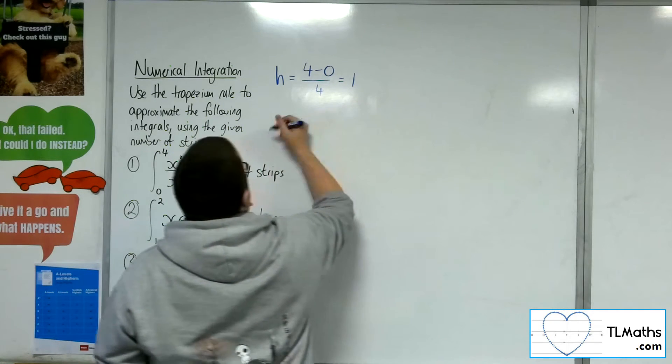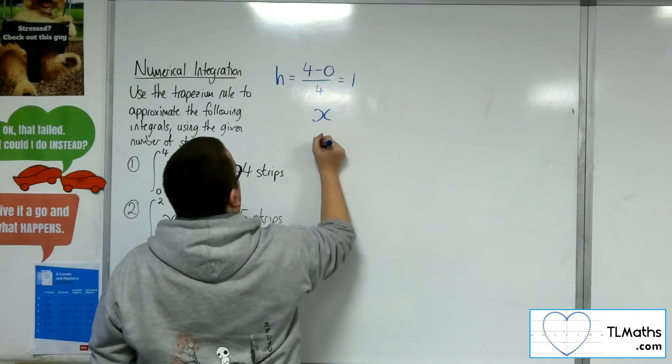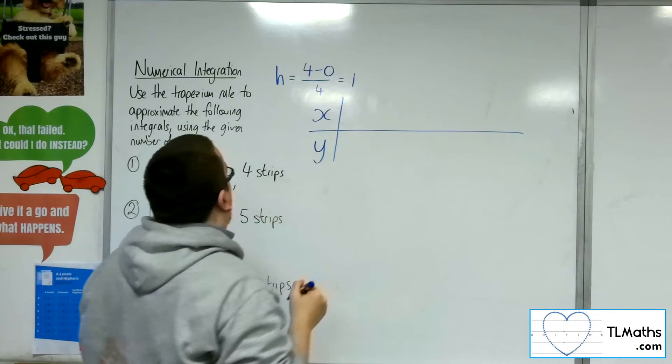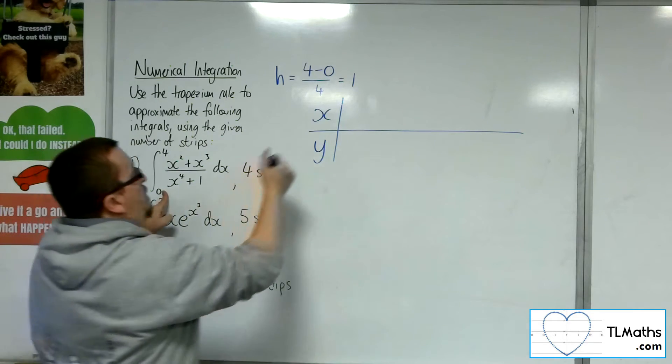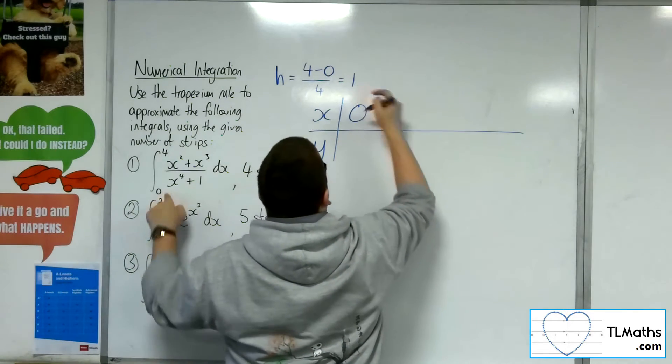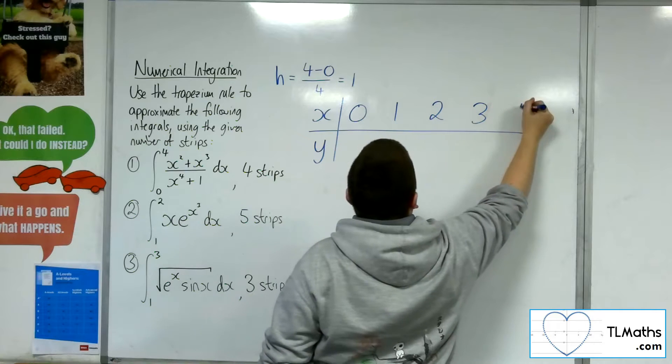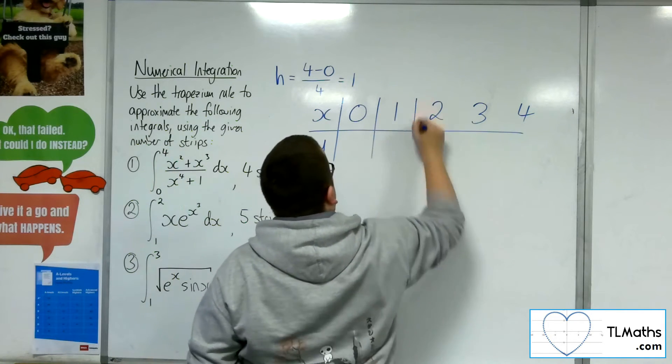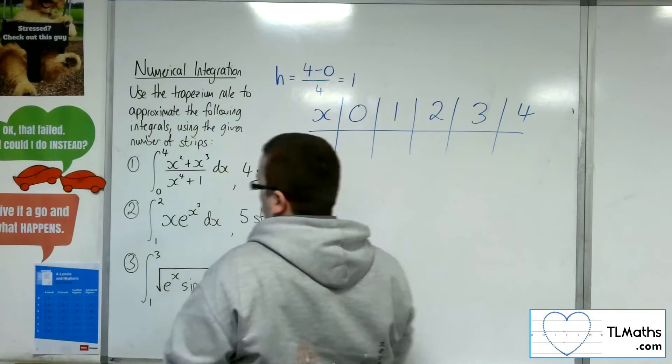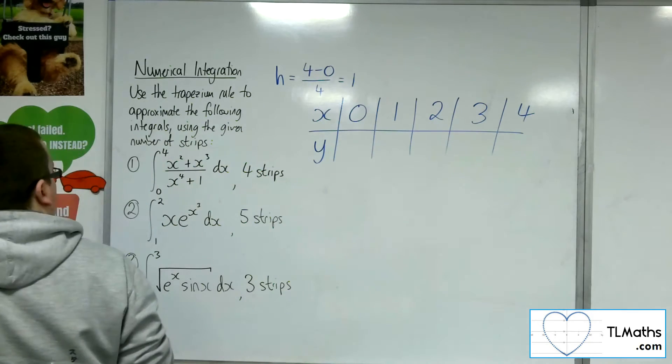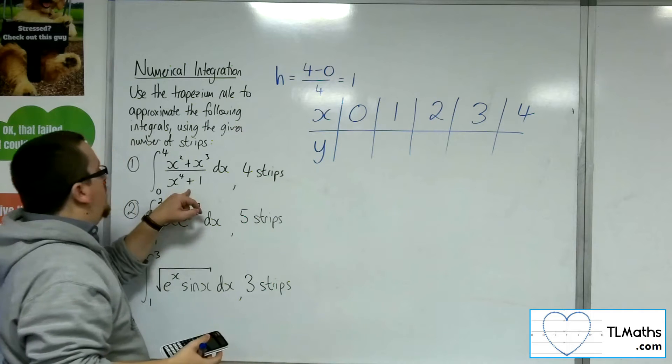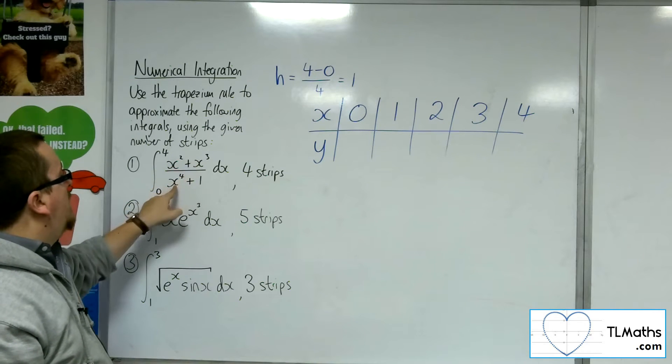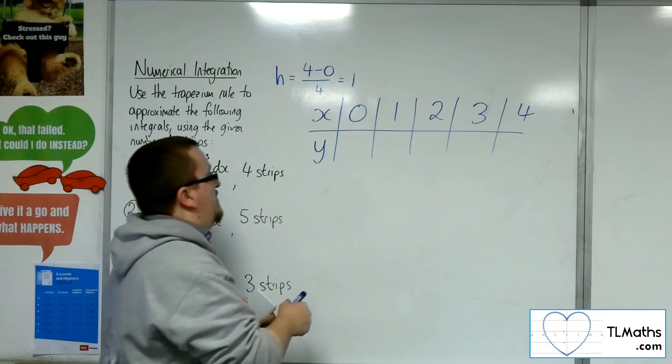We would then like to set up a table of results. So the x-ordinates start from zero and go up in ones, until they hit the final x-ordinate. So what we want to do is to substitute values of x into this, y equals. We're going to get zero plus zero over zero plus one, so that's just zero.